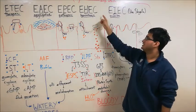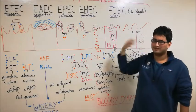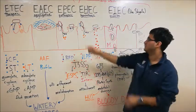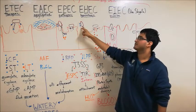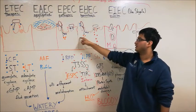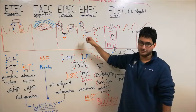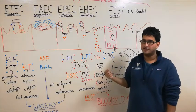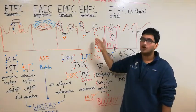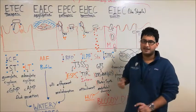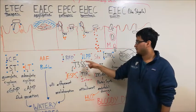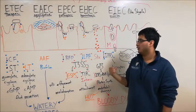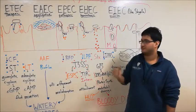EHEC, or enterohemorrhagic E. coli, actually has a lot of similarities with EPEC, which we had previously discussed. It's going to bind to the enterocytes, and then secrete with its type 3 secretion system proteins in there that will cause attachment and effacement morphology. There are three major distinctions, though. The first is that this is happening in the large intestine, not in the small intestine. The second difference is that EHEC will use the LPF, the long polar fimbriae, to adhere to the enterocyte, as opposed to the BFP of the EPEC.